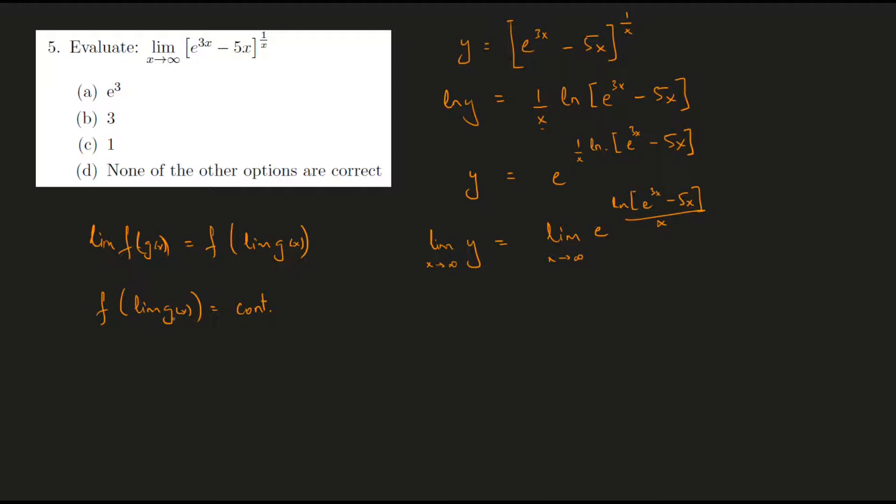So if this thing turns out to be, say, some number a, then we need the function f to be continuous at a. Only then we can perform this step.